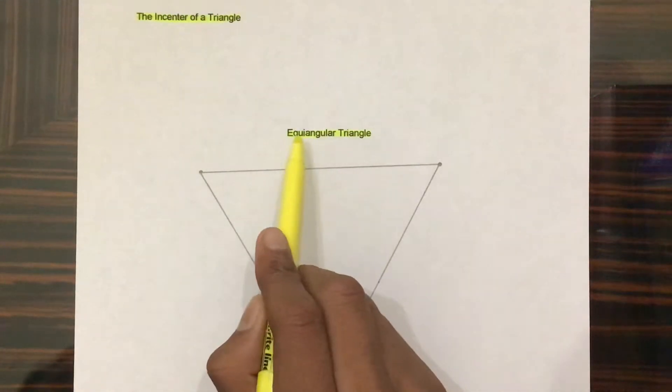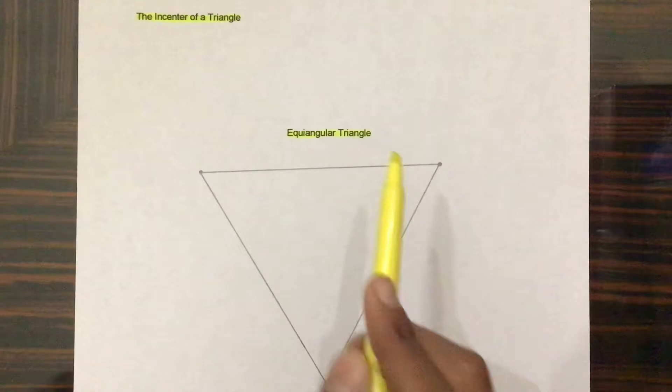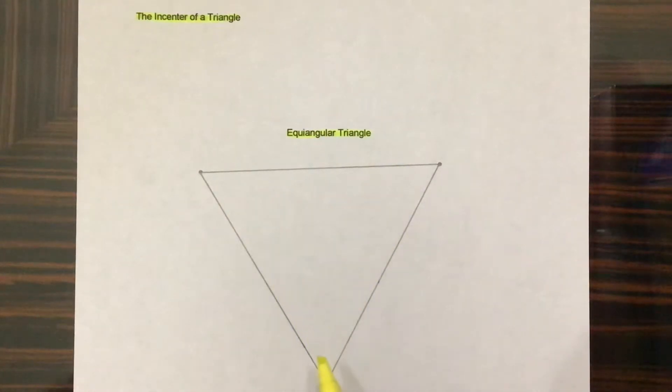So first off, we are given that this triangle is an equiangular triangle, meaning all of its angles are 60 degrees.